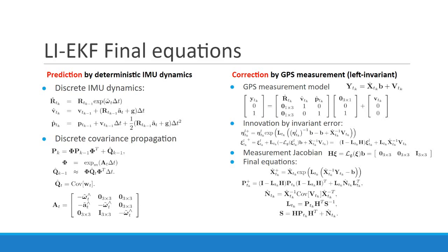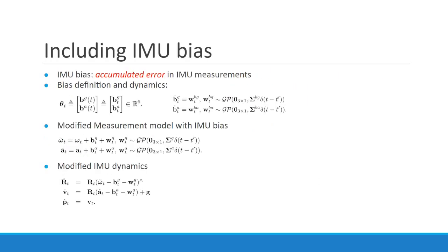For the correction step, given a GPS measurement which is left invariant, we calculate the innovation, extract the Jacobian, and update the estimates using the final equations.